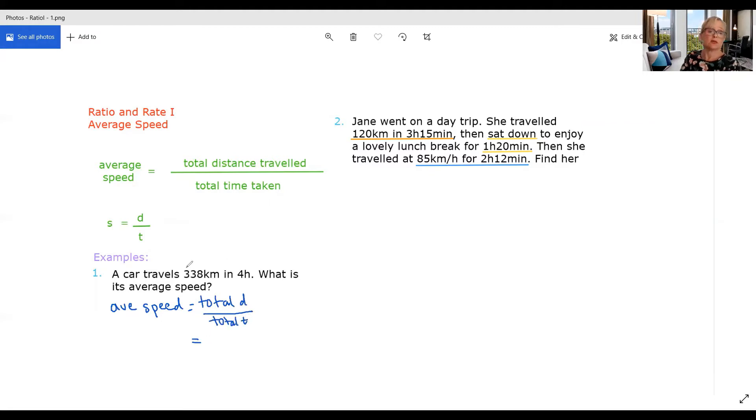This one's fairly easy because we've just had one kind of journey. So we've gone 338 kilometres in four hours and we can just use our calculator to do that. 338 divided by 4 gives us 84.5 kilometres per hour.